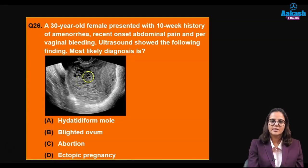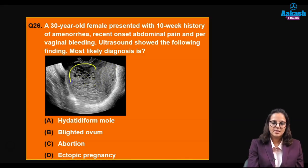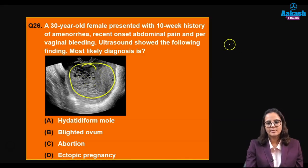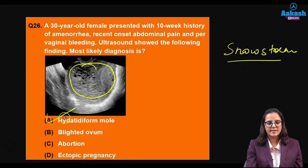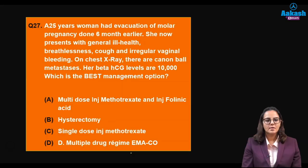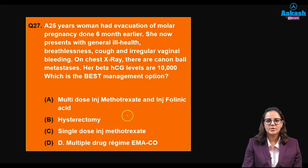A 30-year-old female presents with 10 weeks of amenorrhea and abdominal pain; ultrasound shows a snowstorm appearance — this is the classic finding of a hydatidiform mole.